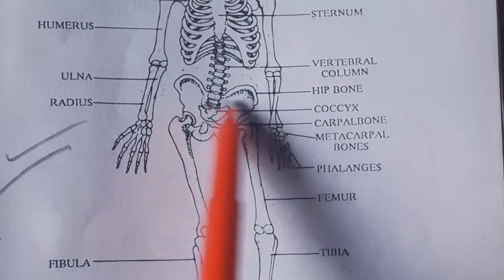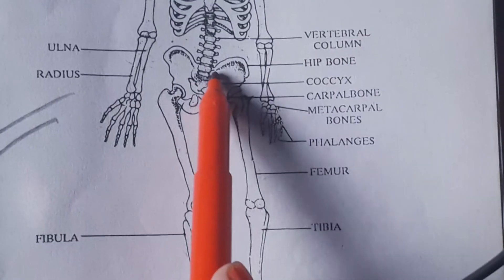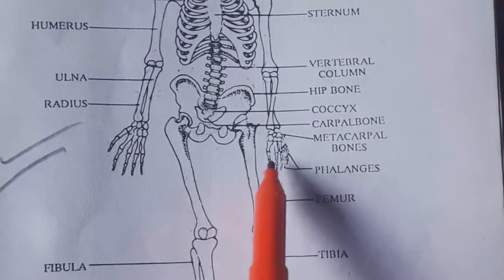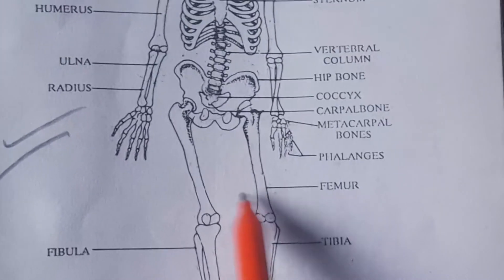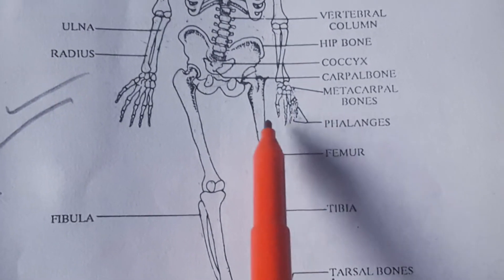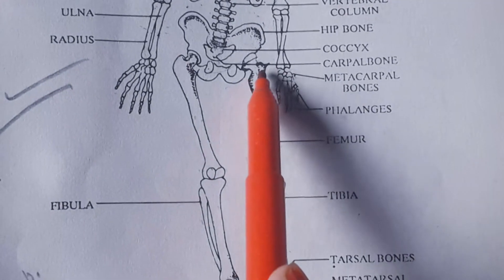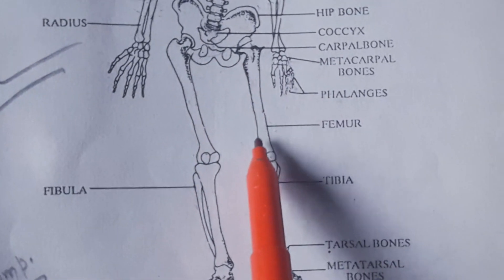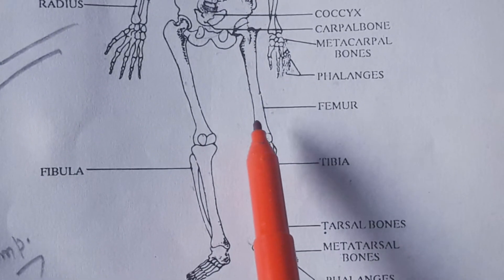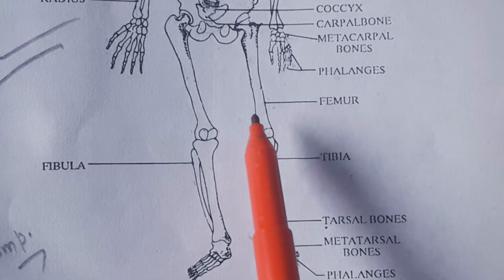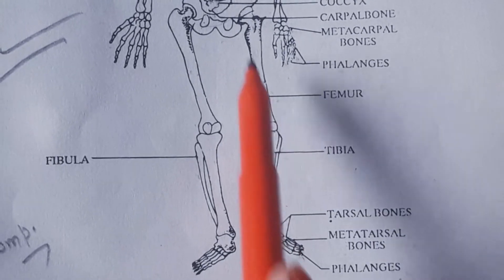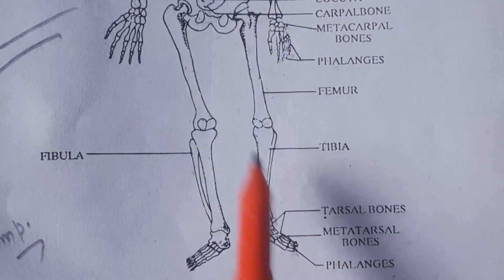This is our hip bone. After that there is the coccyx. The finger bones are called phalanges. Next is the thigh bone, which we call the femur — in Hindi, 'jangh ki haddi.' If asked which is the longest bone in the body, the answer is the femur, i.e., the thigh bone.